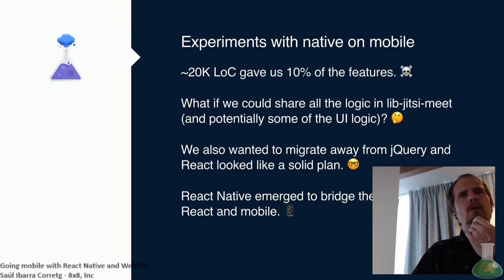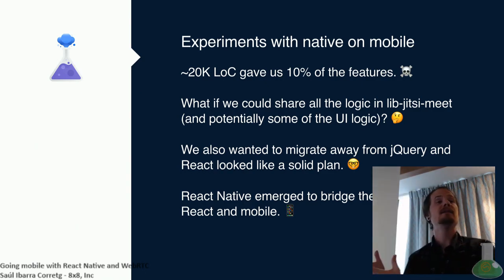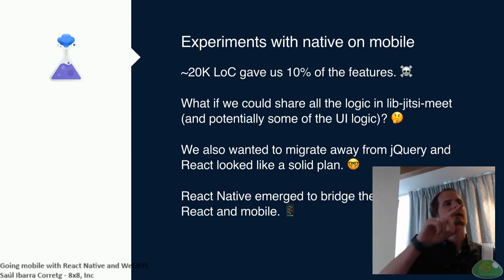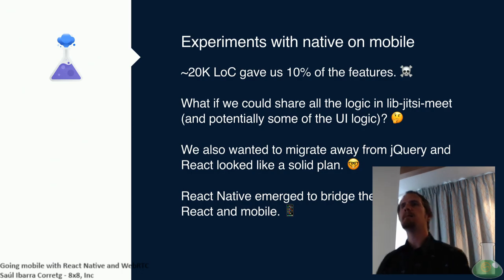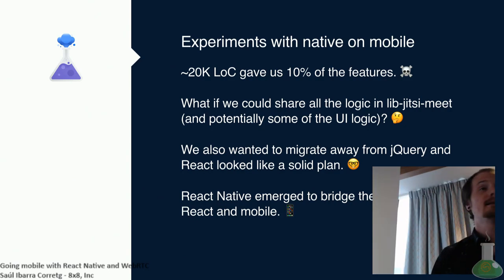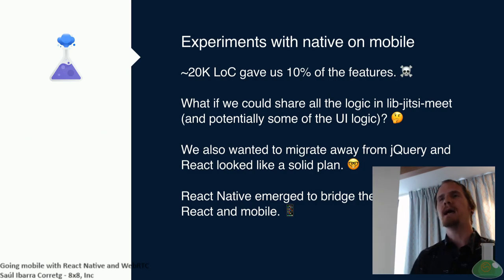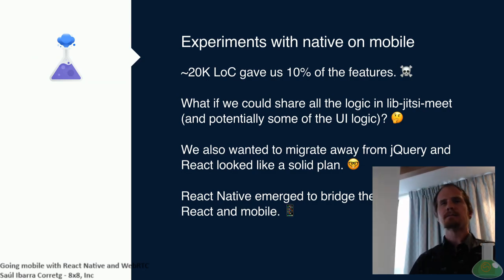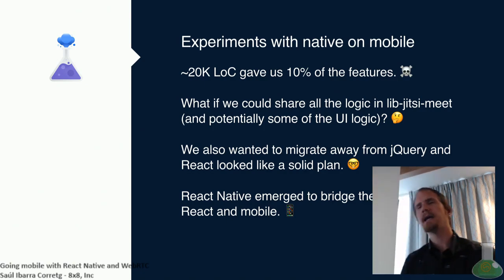What we were wondering is: is there a way for us to leverage those 30,000 or so lines of code in LibJitsiMeet — the library that takes all the signaling and stream handling — so that we can share it between the web application and the mobile application? At the same time, one of the goals we were working towards was getting rid of lots of jQuery baggage and moving to a more modern web architecture using React. And suddenly, Facebook released React Native, which bridged the gap between React and mobile. It looked like a promising avenue.